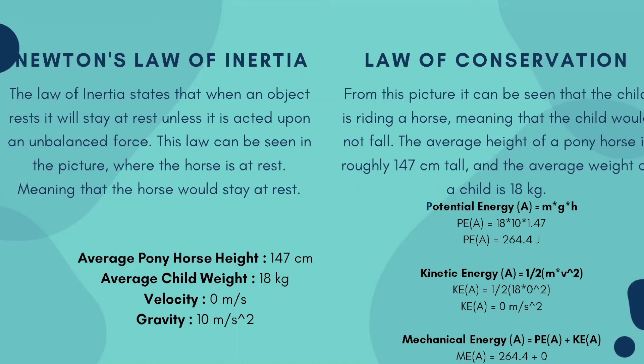The child is riding a horse, meaning the child would not fall. The average height of a pony horse is roughly 147 cm tall, and the average weight of a child is 18 kg. From those variables, we are able to find the potential energy. By using the formula of mass times gravity times height, we are able to find the potential energy of 264.4 joules.